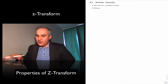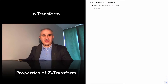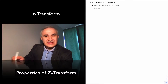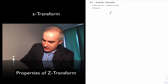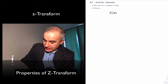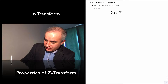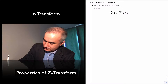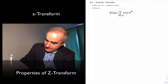Let's look at a couple of properties of the C-transform. For instance, the C-transform is linear. If you go to the definition of the C-transform: x of n, c to the minus n, for n from minus infinity to infinity.